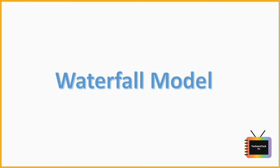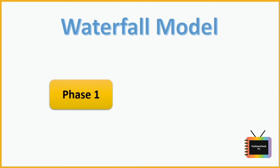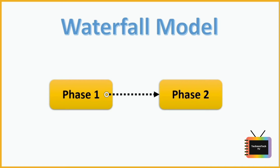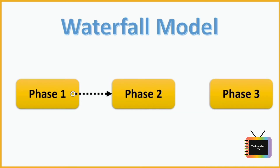In this model the execution happens in sequential order, meaning the output of one phase is equal to the input of another phase. So suppose this is phase one and this is phase two — phase one's output will be input for phase two, and phase two's output will be input for phase three. Each phase should be completed before going to the next phase.